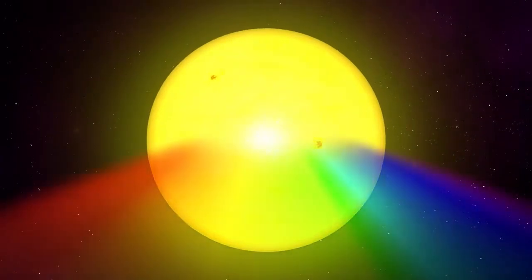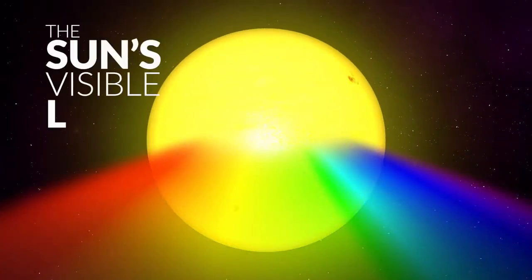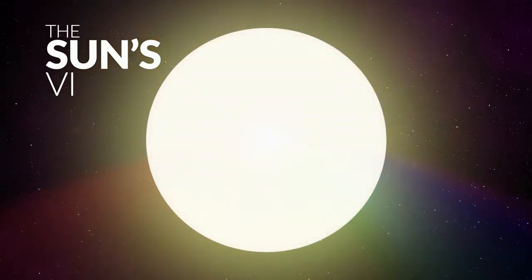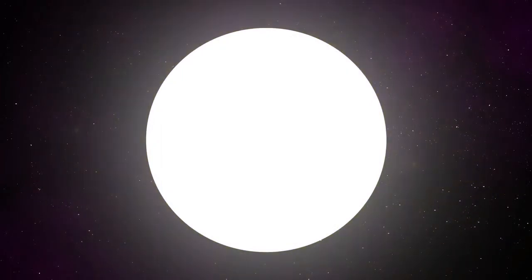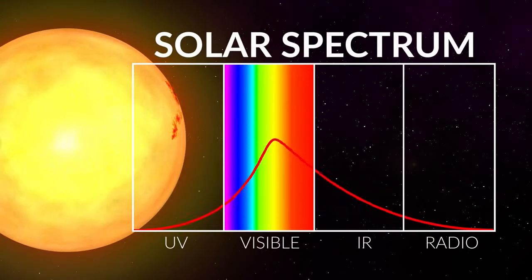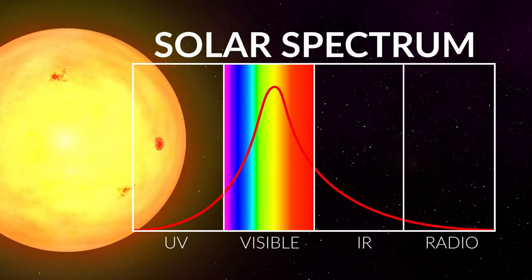The Sun emits all the colors of visible light—reds, oranges, yellows, greens, blues and violets. If all of these colors were equally emitted, then the Sun would appear a very bright white. But instead, the Sun appears yellow because the peak wavelength of its output comes from the yellow range.